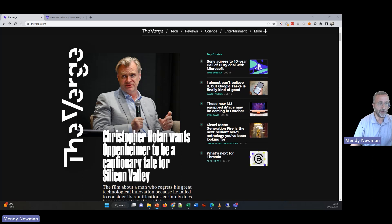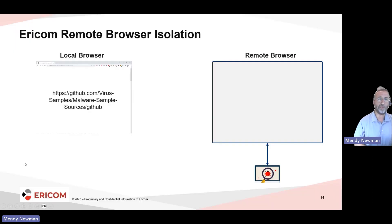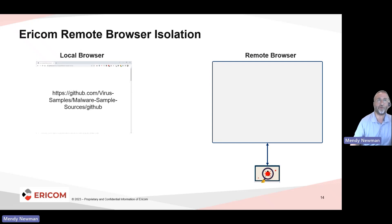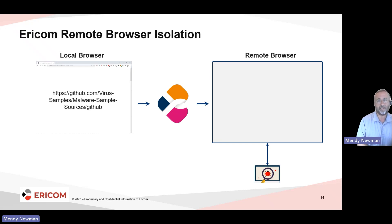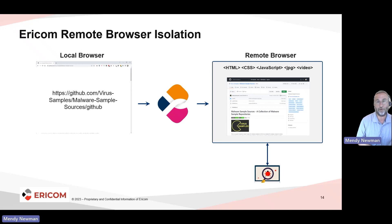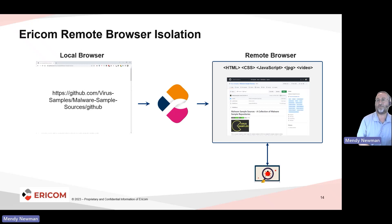The solution is remote browser isolation. Remote browser isolation means that when your local browser wants to request a web page, instead of requesting it directly from that web server and receiving all those files to the local browser, those requests will be redirected — in this case, to the AERICOM cloud. In our cloud, we have a series of remote browsers in a secure container. All the content needed to render that web page is loaded in one of these secure containers, so that even if there is malicious content there, it never comes to your local browser.